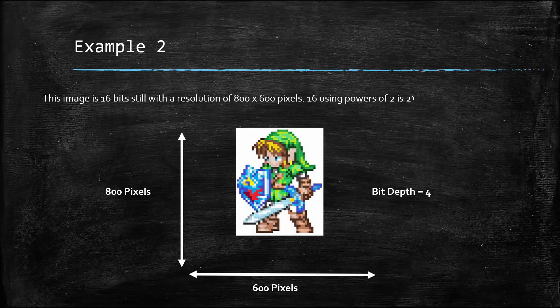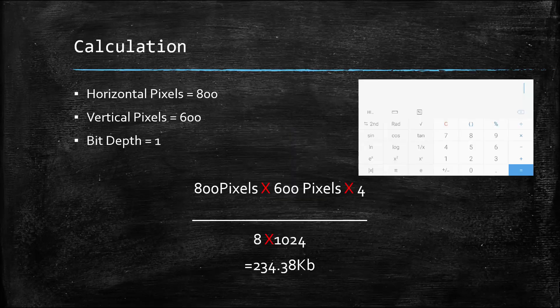In our second example there is 16-bit color. We need to work out the bit depth by making 16 using powers of two: 2, 4, 8, 16 — that's four steps, giving a bit depth of four, or two to the four. So with 800 by 600 pixels and a bit depth of four: 800 times 600 times 4, divided by 8 times 1024, gives us 234.38 kilobytes, rounded.